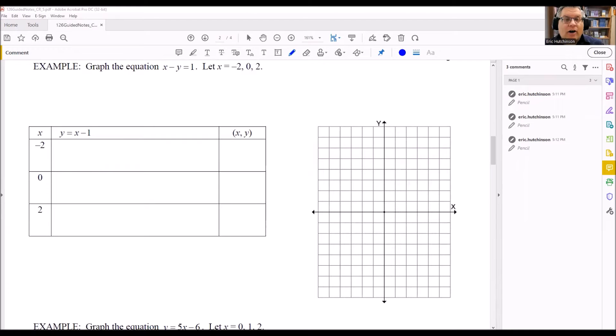I want to talk about how to graph lines by plotting points. For these problems, they give you some kind of equation and tell you what x values to use. What we do is fill out the table, get a list of points, use those to plot, and then just connect them together with a line.